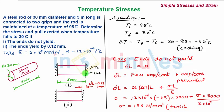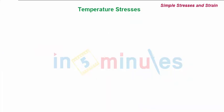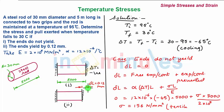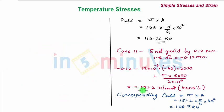Now we can see that when the ends do not yield, the stress is 156 Newton per mm square and the resulting load is 110.26 kilonewtons. Whereas when the same ends yield by just 0.12 mm, the resulting stress is only 151.2 Newton per mm square, slightly less than in the previous case.